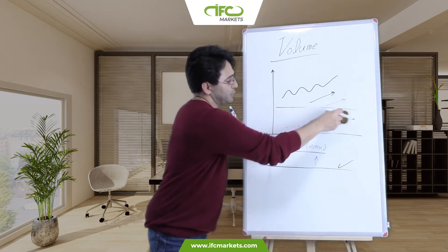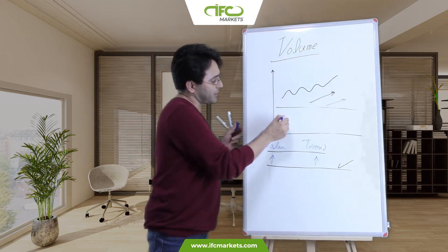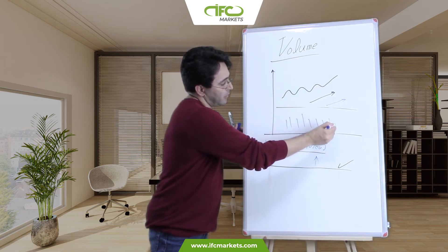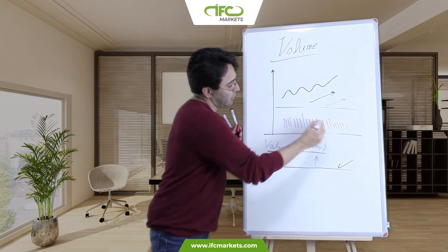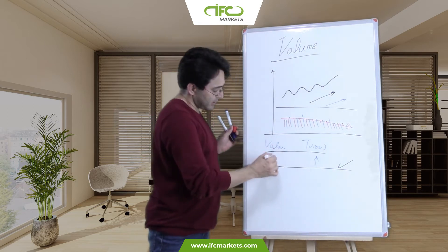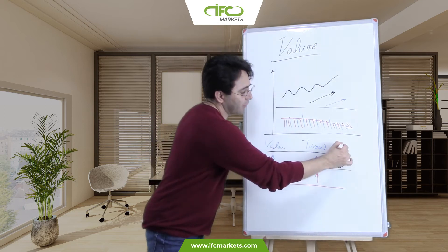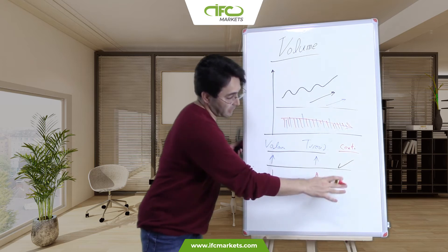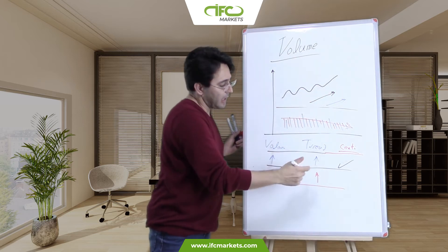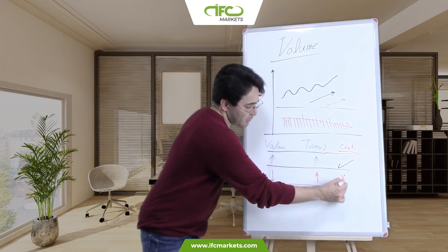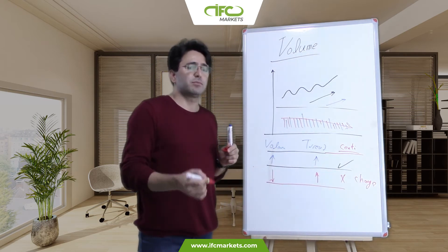But if you're in a clear uptrend and at the same time the market volume is decreasing, the price is raising on the chart but your volume is decreasing — it means that your trend doesn't have enough power to continue. So it probably will change the trend. It can be the sign of a possible trend change.